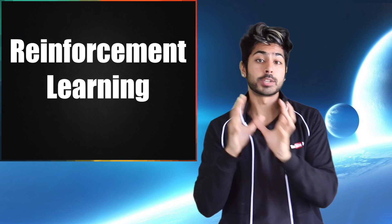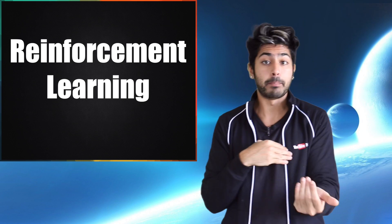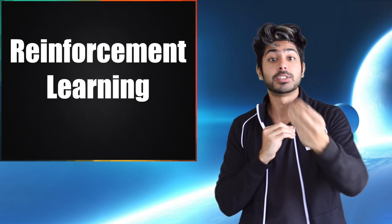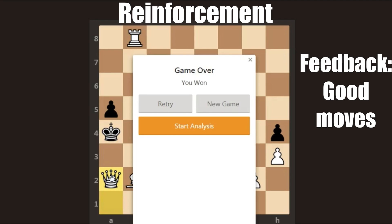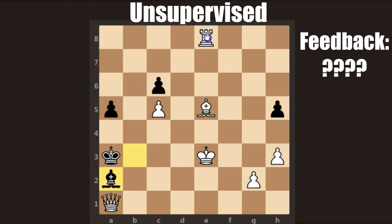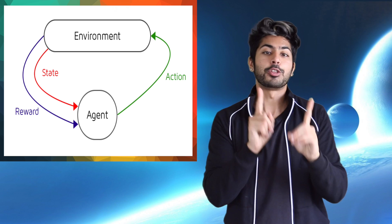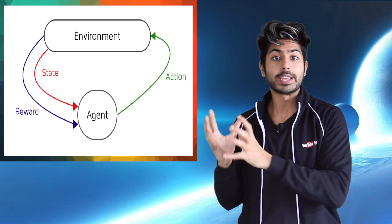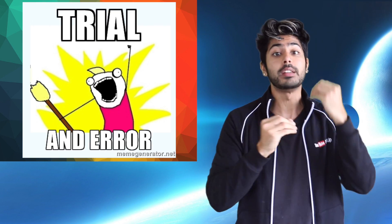The third type is reinforcement learning. This is where a model isn't given feedback right off the bat — it only gets it if it achieves its goal. So if we're trying to create a reinforcement learning bot that can learn to beat humans at chess, it would only receive feedback if it won the game. Whereas in the supervised approach we get feedback every move, and in the unsupervised approach we'd never get feedback even if it won. Unlike the other two, reinforcement learning is linked to the idea of interacting with an environment through trial and error.